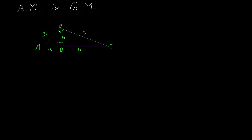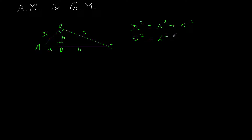Consider the small triangle ADB. Here R is the hypotenuse and H and A are the legs, so R² = H² + A². Similarly, for triangle BCD, we have S² = H² + B².